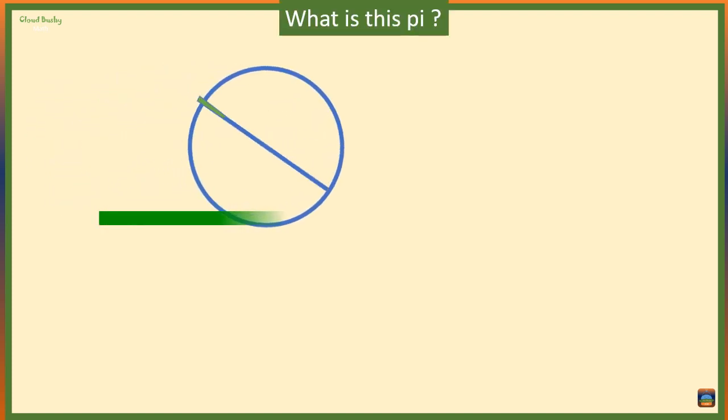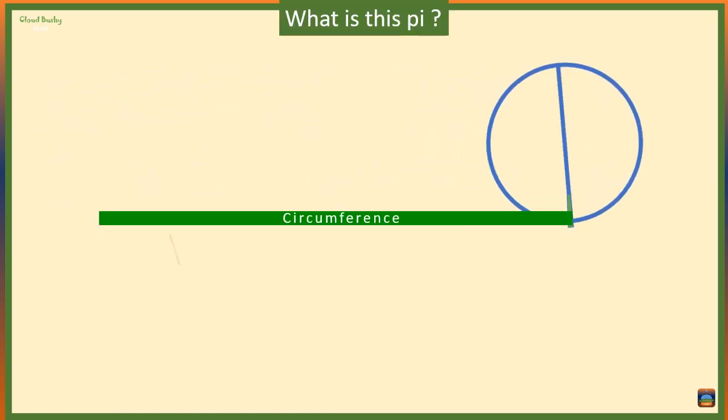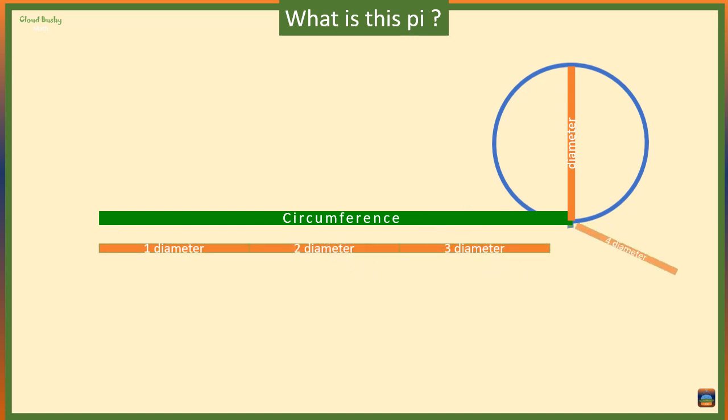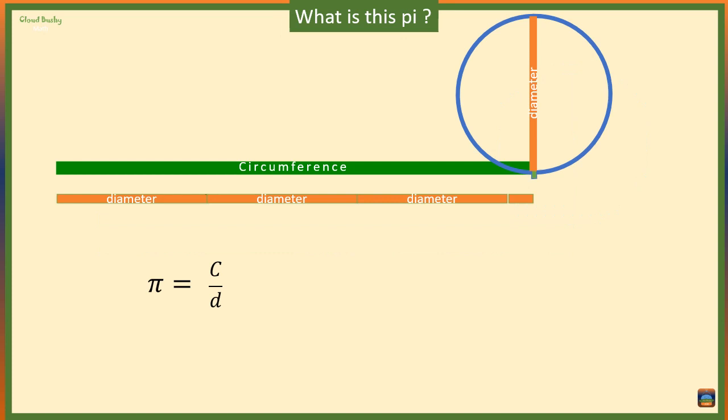In a previous video, we saw that the circumference of a circle is equal to 3 and a little bit more diameters. Now if we take pi to be 22 over 7, it implies that the circumference has a total of 3 and 1/7 diameters.